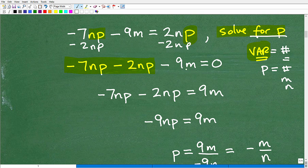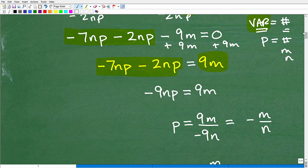Now, this negative 9m, M, is one of those variables. It's not P, so I could just think of this as a number, so I want to get it over to the right-hand side. So I'm going to add 9m to the right-hand side, and it gets me to this. I have 9m here, and I have my negative 7np minus 2np. And if you notice what I have, let's go down here, these are like terms.